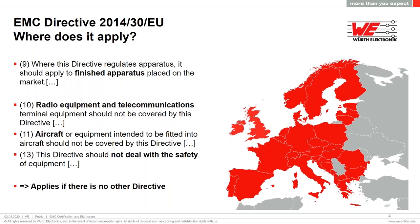Where does it apply? First, the most important thing to highlight is that it is connected to finished devices. That means if you have a finished product that you want to put on the market, you need to follow the directive. Some devices are not covered: radio equipment and telecommunications are covered with another directive, as is aircraft and military equipment. The directive is also not dealing with the safety of the equipment. All devices not under any other directive fall under 2014/30/EU.